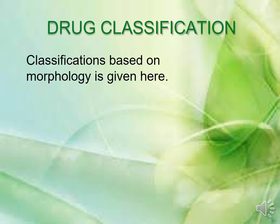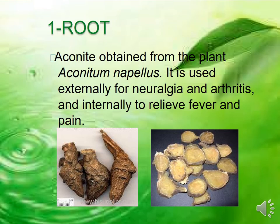There are various ways to classify drugs, but the classification based on morphology is one important method. The first class is root-based drugs. Aconite is a root-based drug obtained from the plant Aconitum napellus. It is used externally to treat neuralgia and arthritis, and internally to relieve fever and pain.